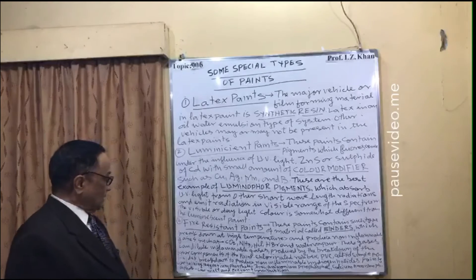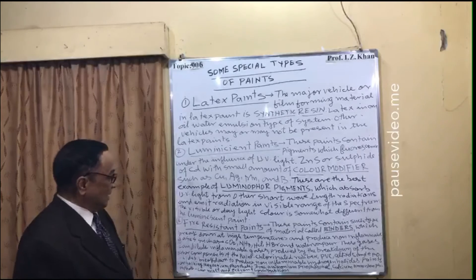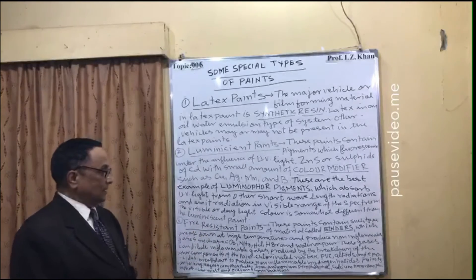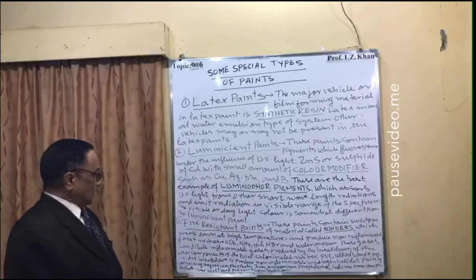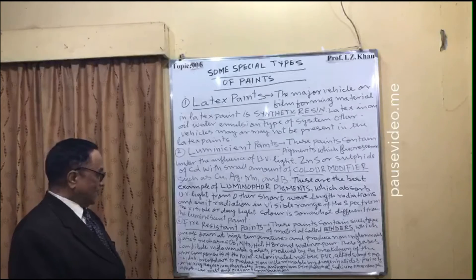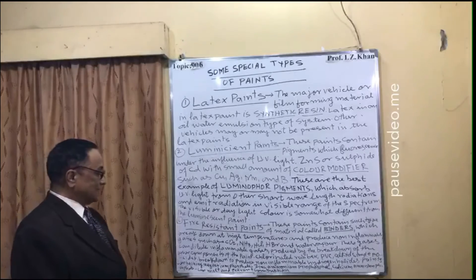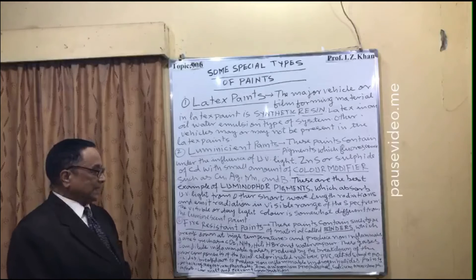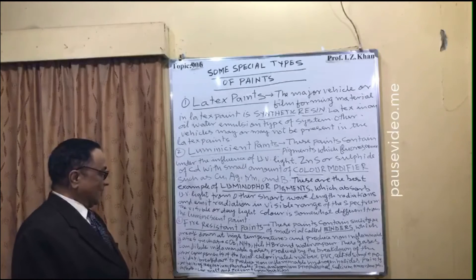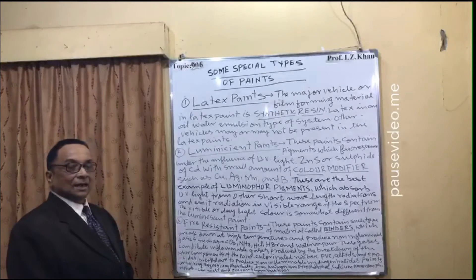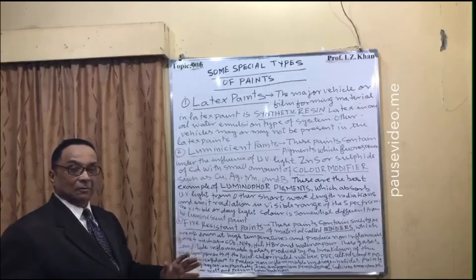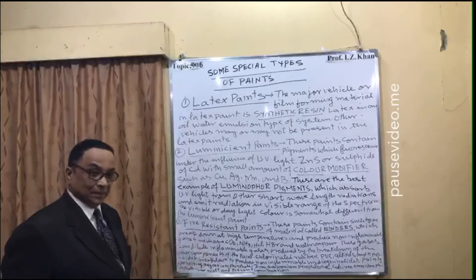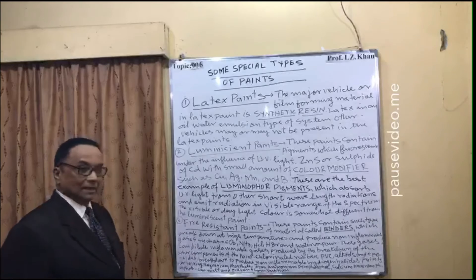The binder components break down to produce non-inflammable hydrogen halides. These non-inflammable hydrogen halides are produced by PVC, chlorinated rubber, and epoxides. Additionally, compounds containing magnesium phosphate, zinc ammonium pyrophosphate, and calcium ammonium phosphate can melt and prevent combustion by forming a barrier between inflammable and non-inflammable gases, thereby resisting the fire.